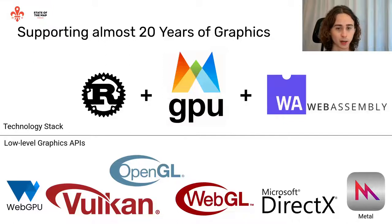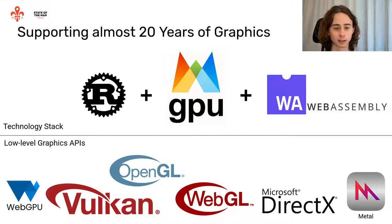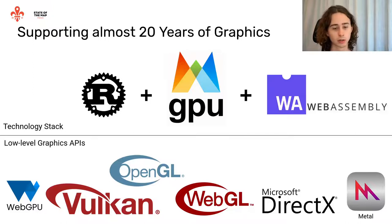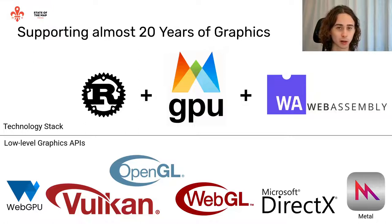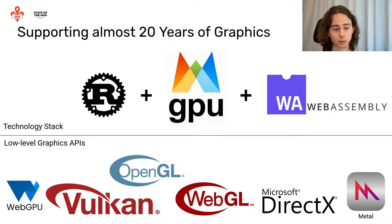With MapLibre RS we support 20 years of graphics. The excellent WGPU library solves this problem for us. We use Rust and WebAssembly to reach browsers. WGPU allows us to reach all of those low-level graphics APIs: OpenGL, which is important for mobile; Metal, for iOS and macOS; DirectX, essential for Windows; Vulkan, popular on Linux; WebGL, essential for today's browsers; and WebGPU, for browsers of the future.